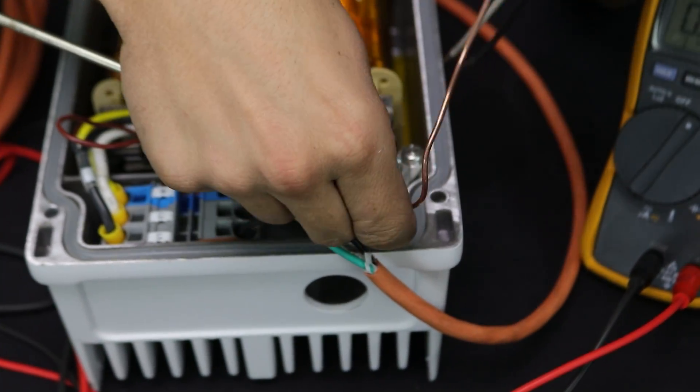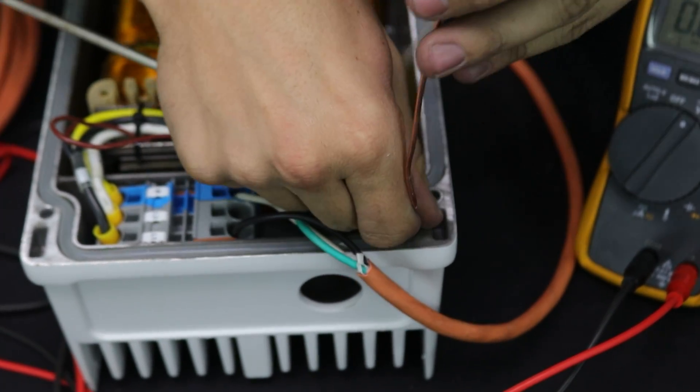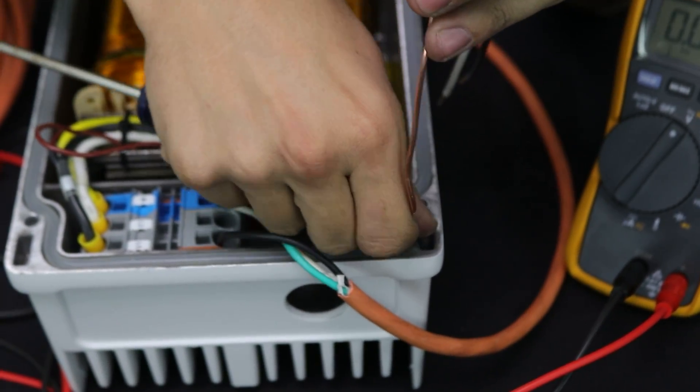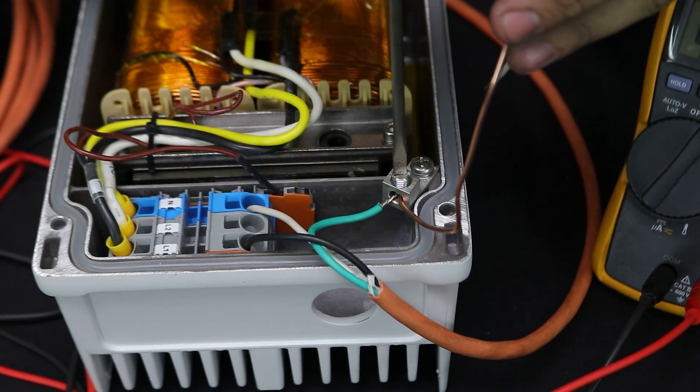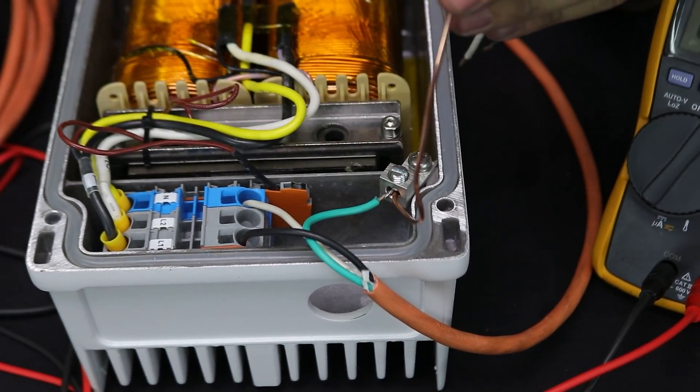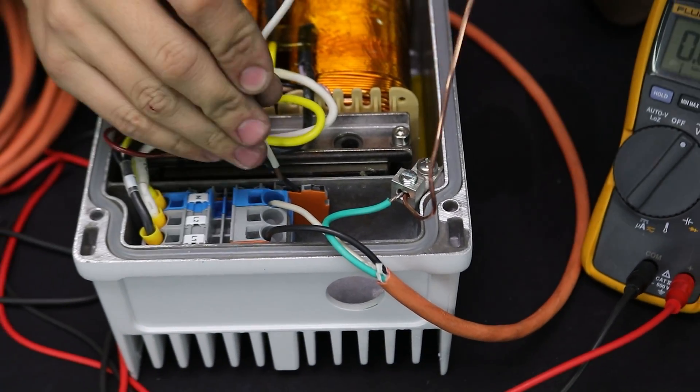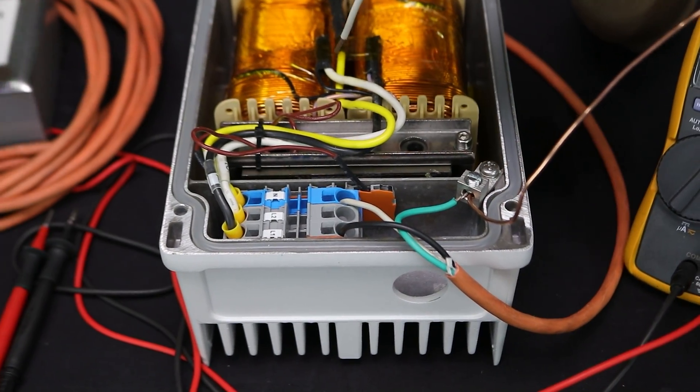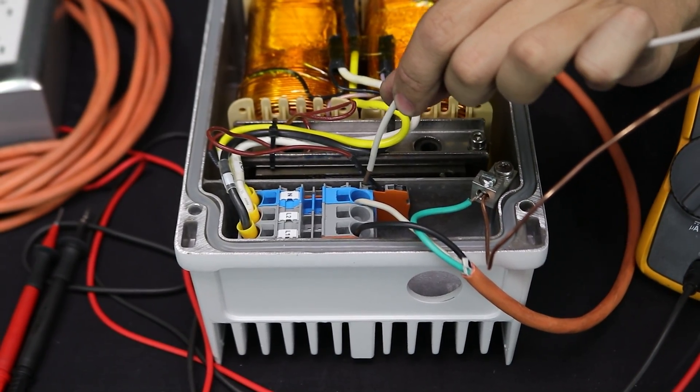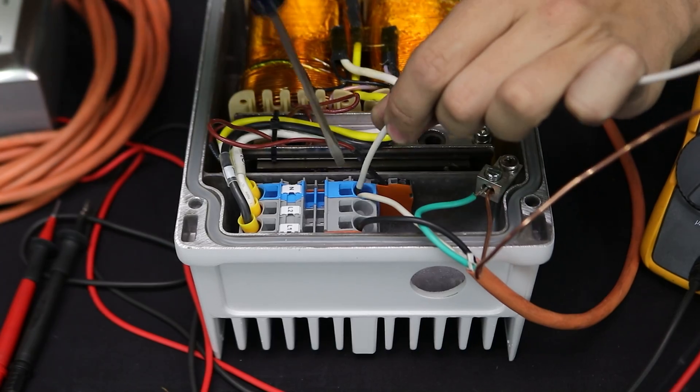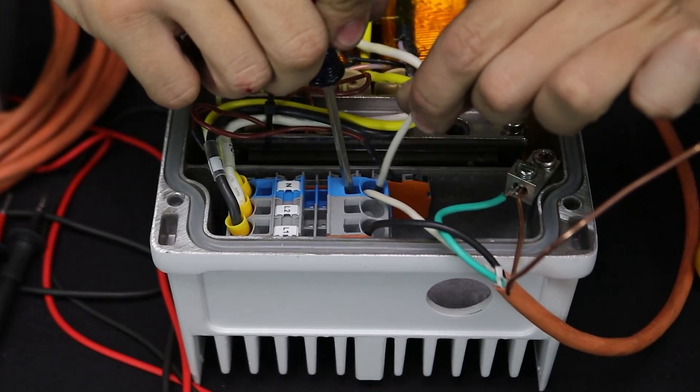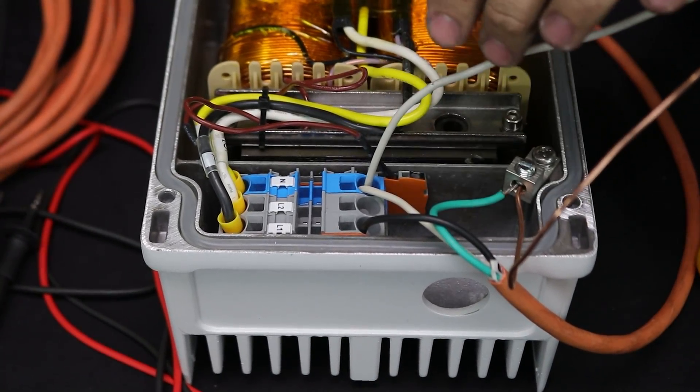But over a long period of time, you wouldn't want this because it's not rated for it. It's a violation of code, but it's going to be okay for today. I've got this landed in the lug. And then your neutral for both L1 and L2 is the same neutral coming in from your cord. So I'm going to tie this in to the terminal here.